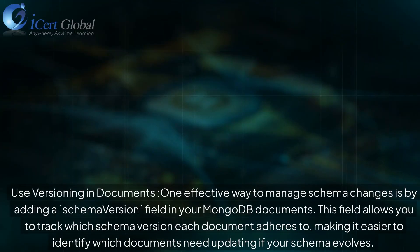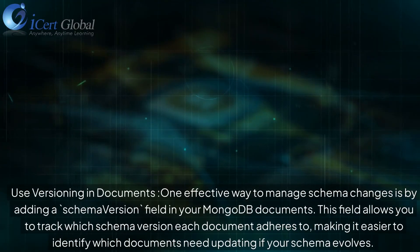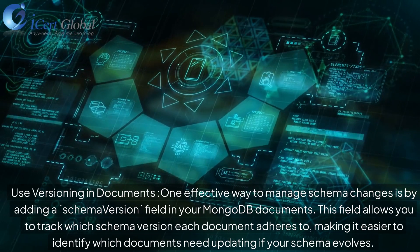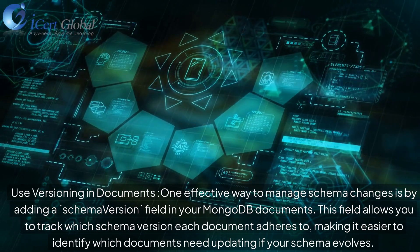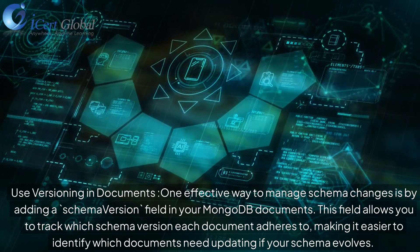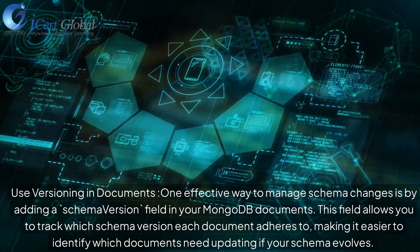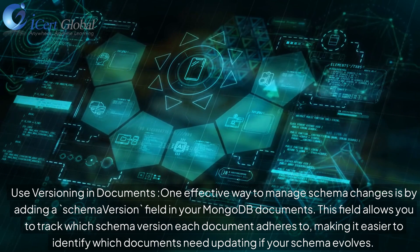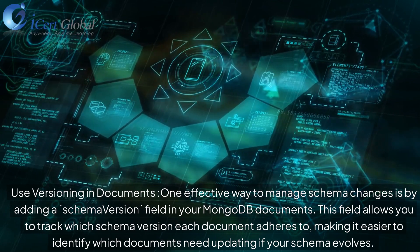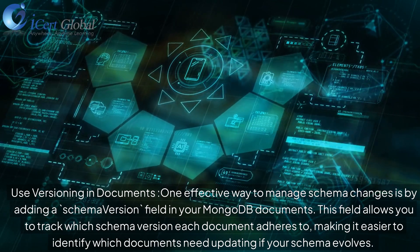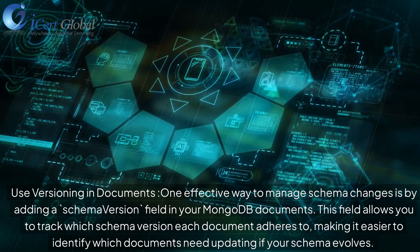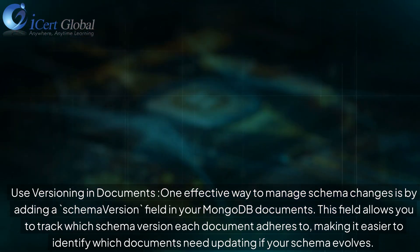Use versioning in documents. One effective way to manage schema changes is by adding a schema version field in your MongoDB documents. This field allows you to track which schema version each document adheres to, making it easier to identify which documents need updating if your schema evolves.